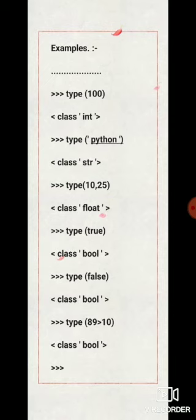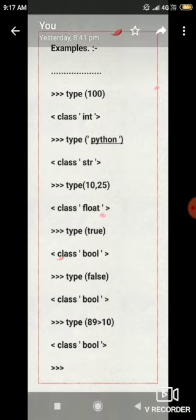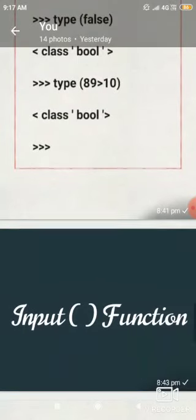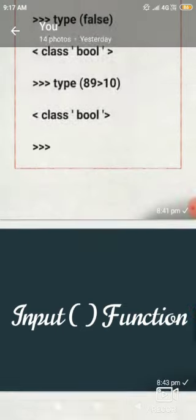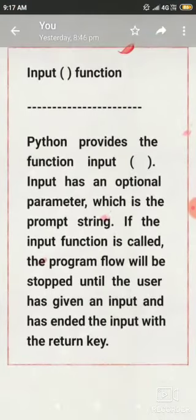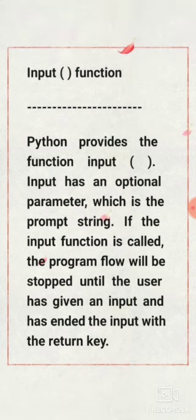These are the example of type function. Input function. Python provides the function input. Input has an optional parameter which is the prompt string. If the input function is called, the program flow will be stopped until the user has given an input and has ended the input with return key.